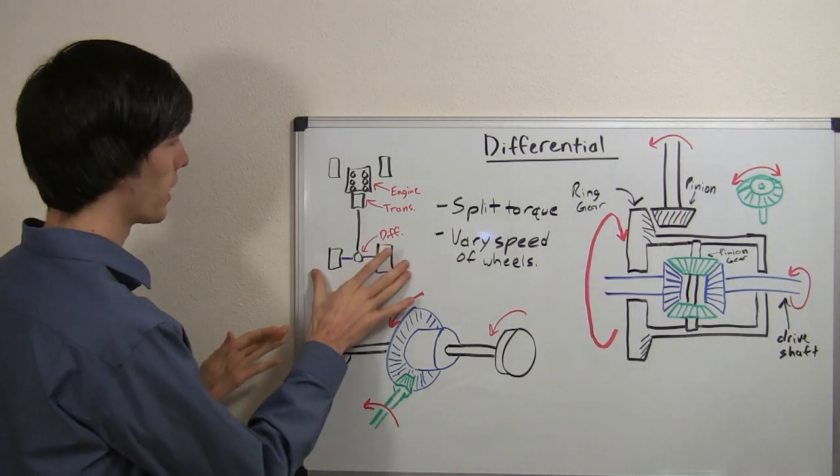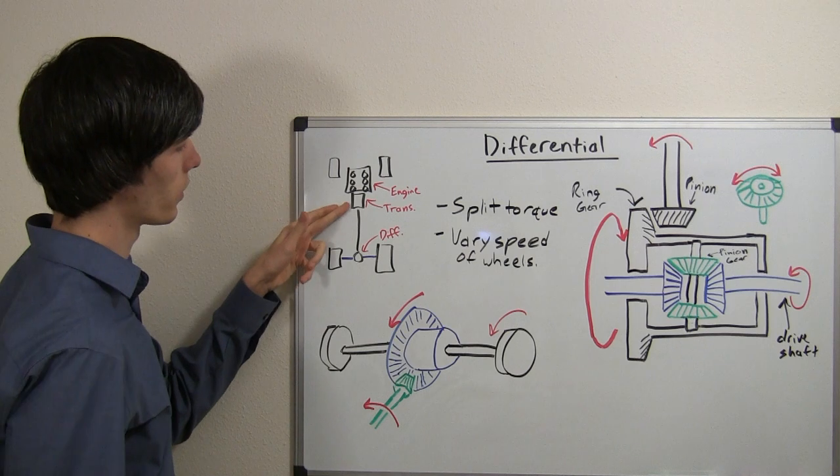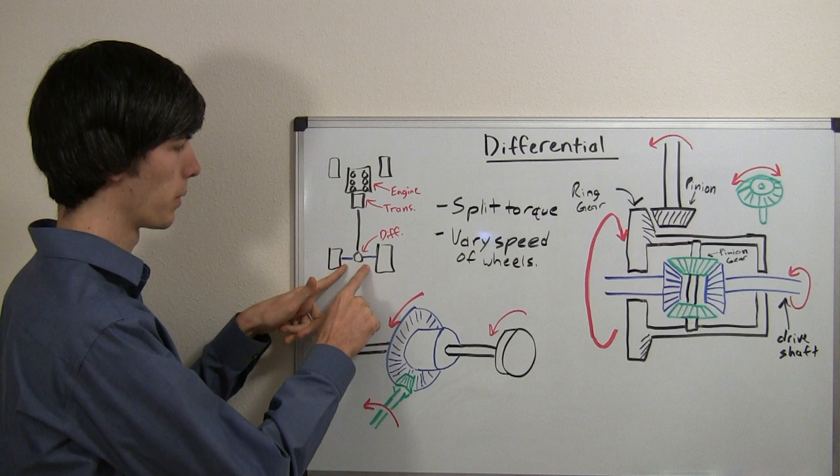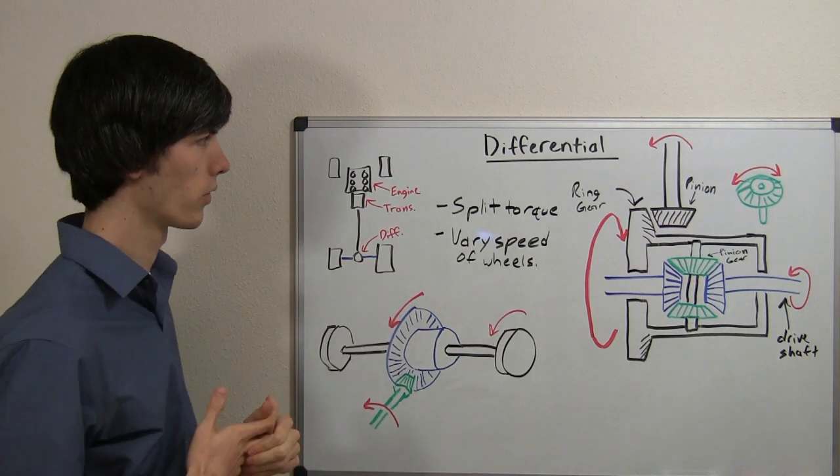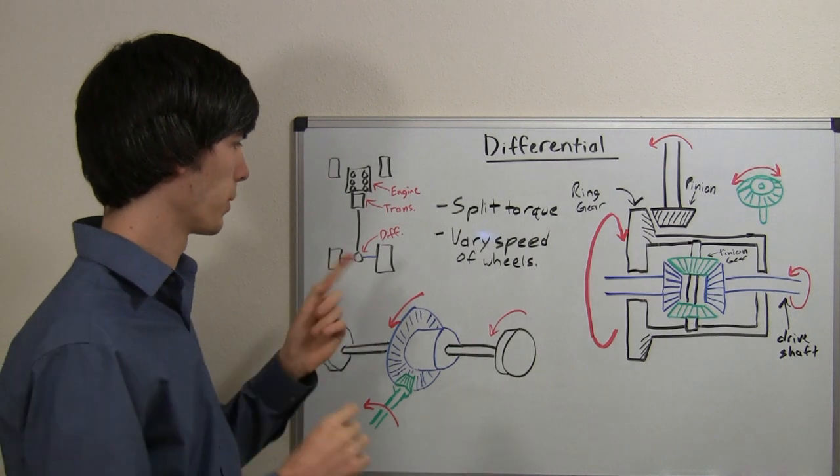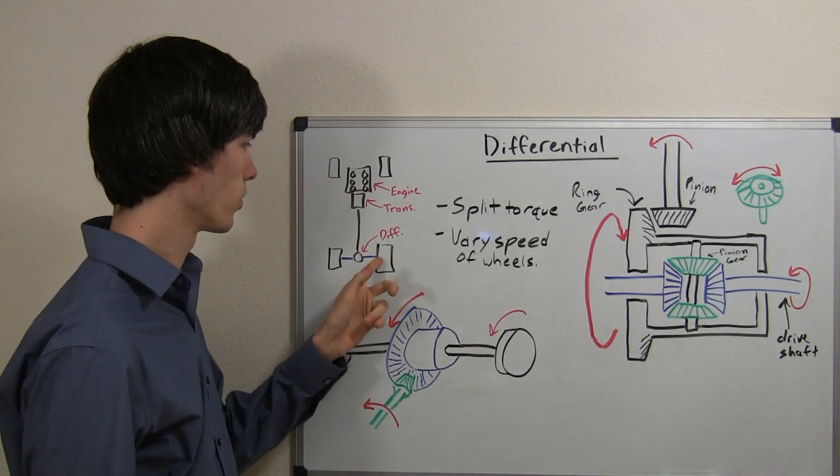So here we're looking down on a car from above. We've got the engine, the transmission connected to the drive shaft, which sends power to the differential, which then splits the power to the two rear tires. So the differential has really two purposes. It's splitting the torque between the two rear tires and sending the torque from the engine to the two rear tires.